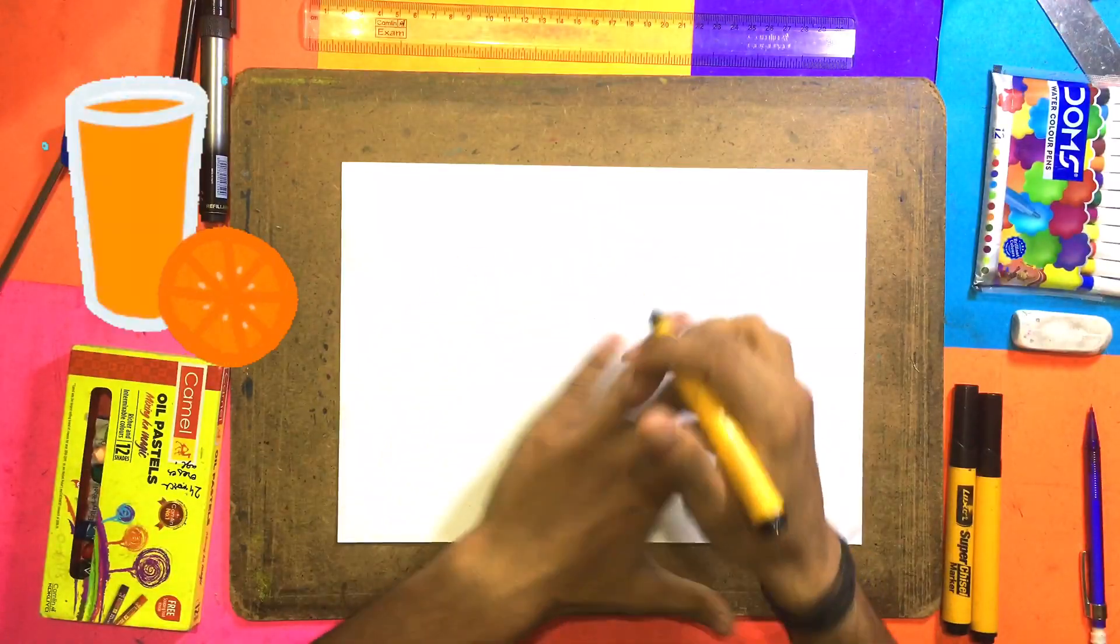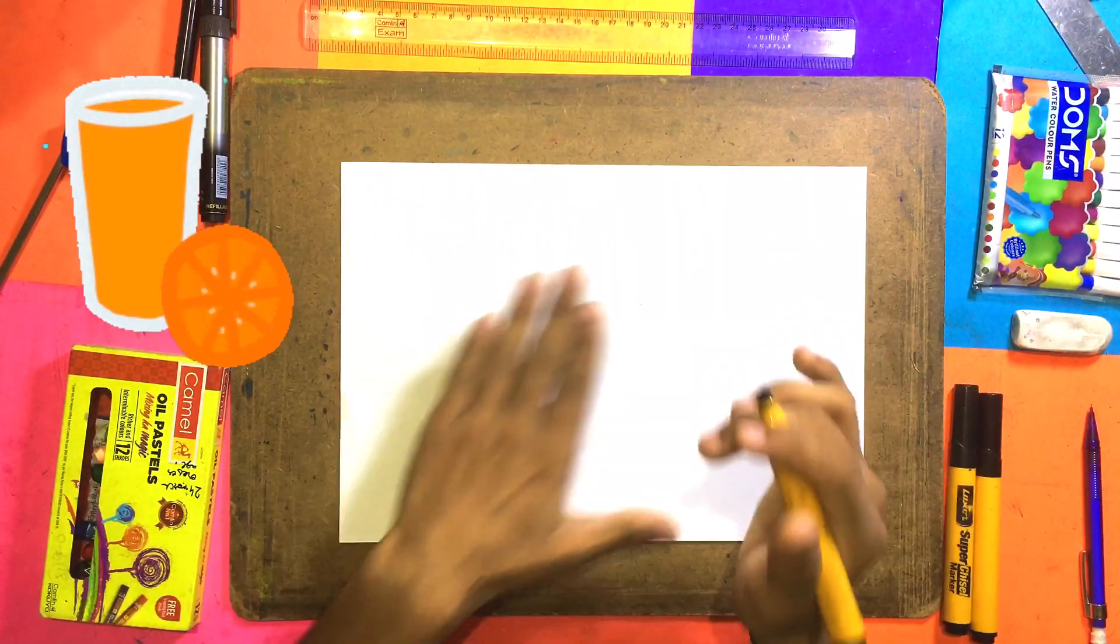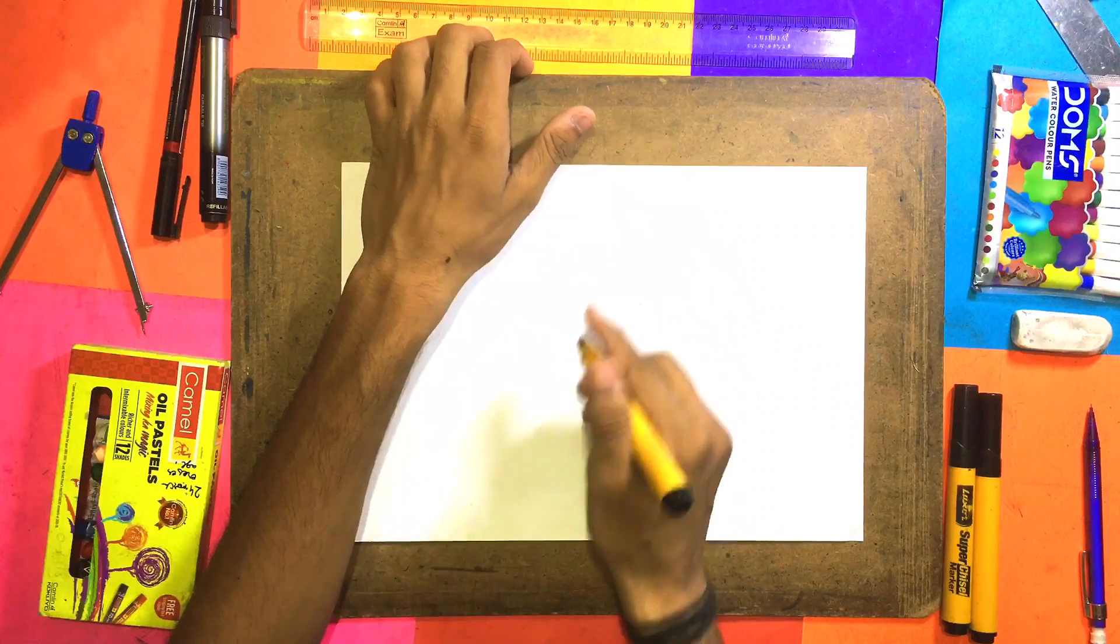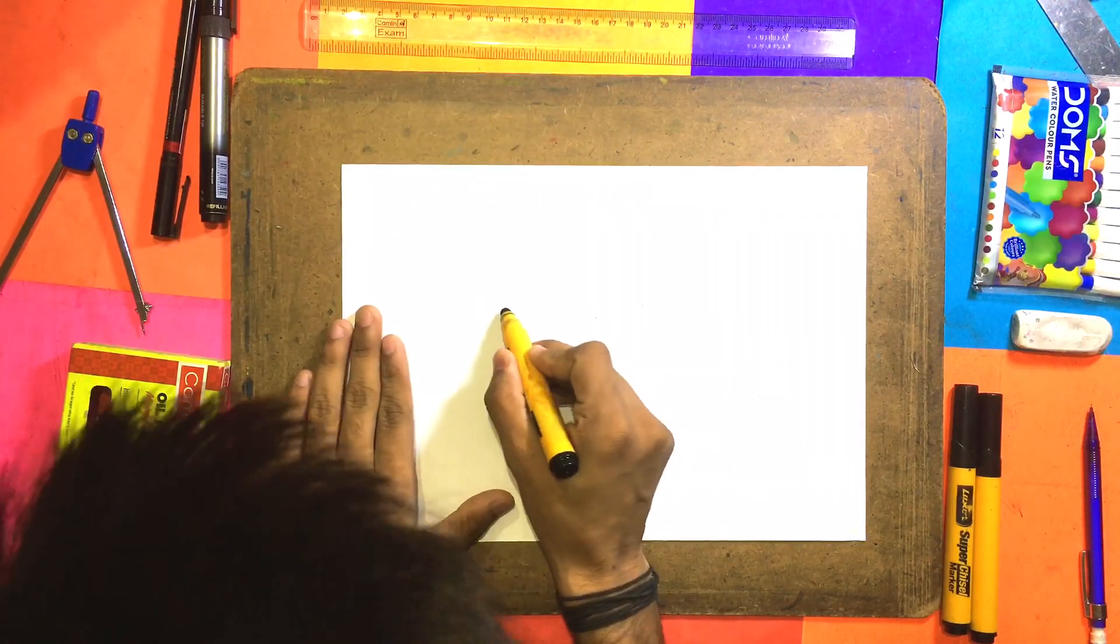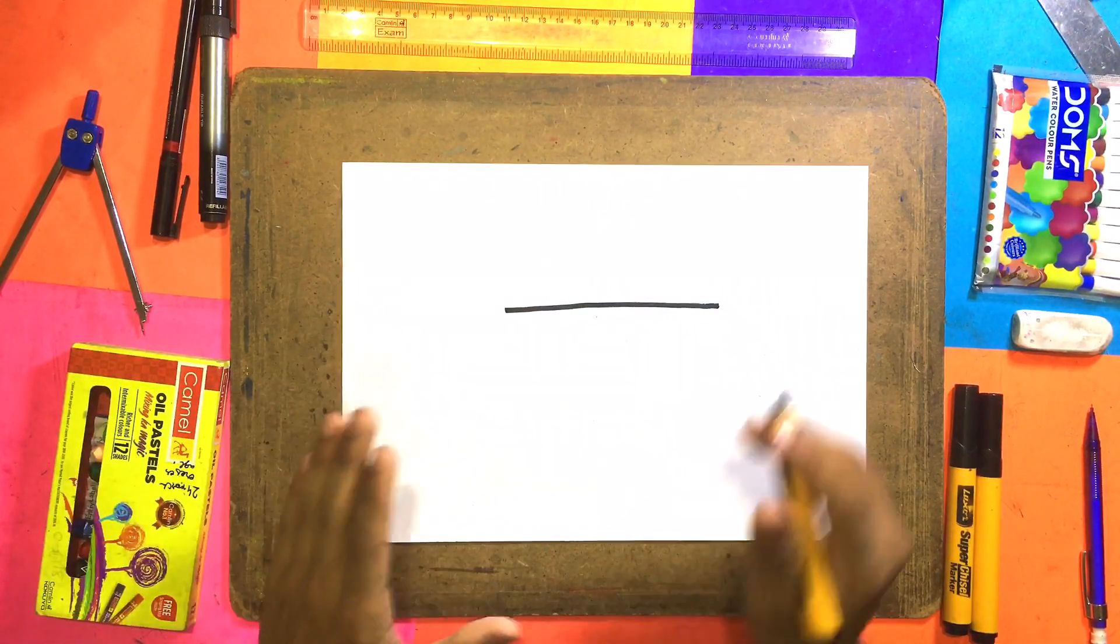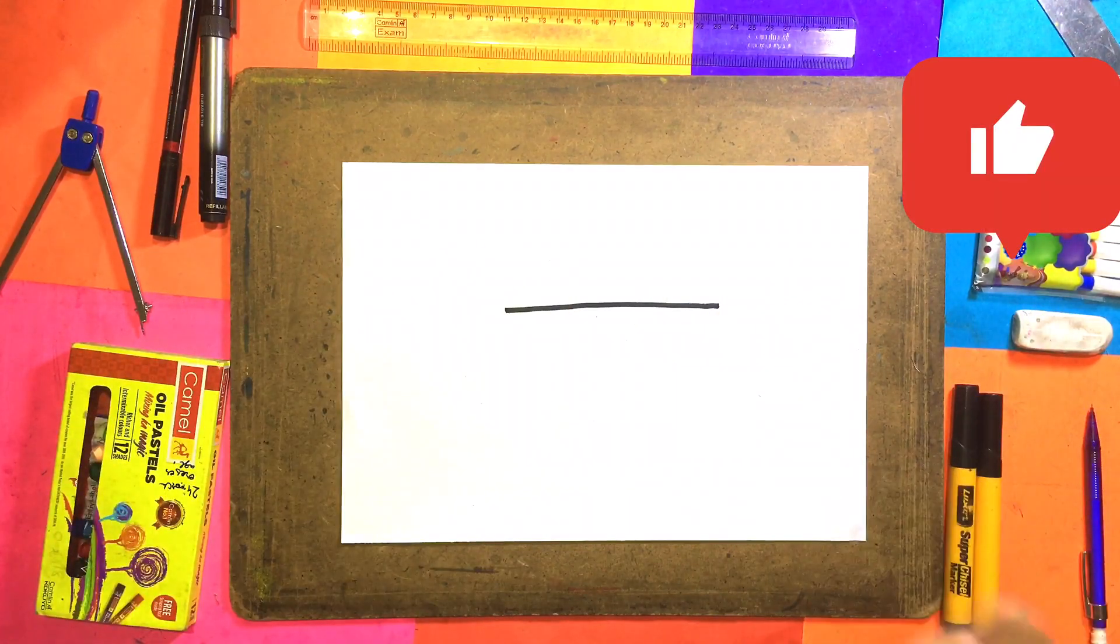So guys, let's go to this channel. I'm going to make it with my own pencil. Let's see how we will make it. First, we will make a long line under paper, something like this. We have made a line here. It's very simple.